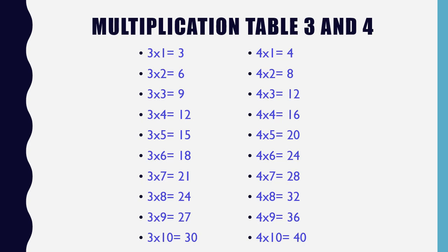Multiplication table 4: 4 × 1 = 4, 4 × 2 = 8, 4 × 3 = 12, 4 × 4 = 16, 4 × 5 = 20, 4 × 6 = 24, 4 × 7 = 28, 4 × 8 = 32, 4 × 9 = 36, 4 × 10 = 40.